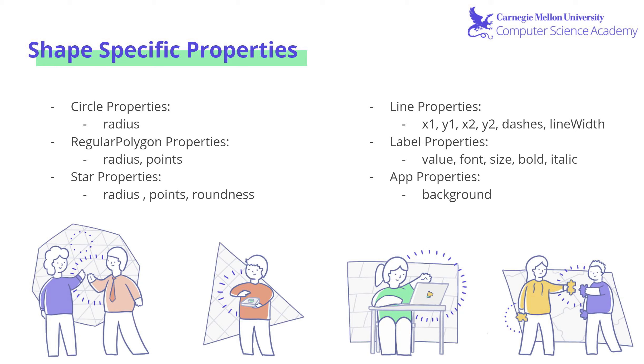On top of the properties we discussed in the previous slide, some properties are only shape specific. So here are some listed. We have circle with the radius. A regular polygon has radius and points. Stars have radius, points, and roundness. Line properties include the end points, dashes, line width. Label properties include value, font, size, bold, italic. And app properties, the app being the entire program you're running, also has a background that you can set.